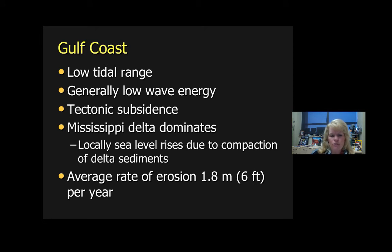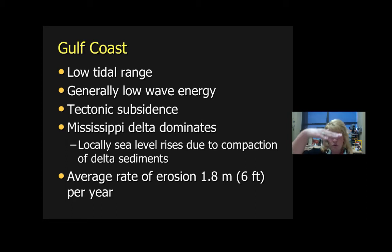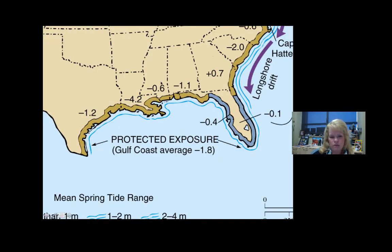The Gulf Coast has a low tidal range and low wave energy, which is one reason you don't see many significant beaches. Subsidence is occurring in the area, and where sediments compact from deltaic deposits, sea level may appear to rise. The average rate of erosion in the Gulf Coast is 6 feet per year — it's losing mass rather than gaining.